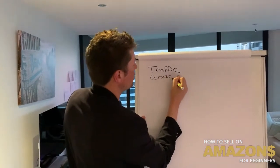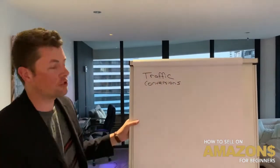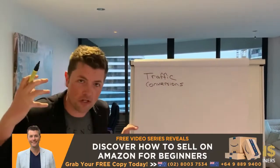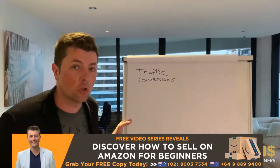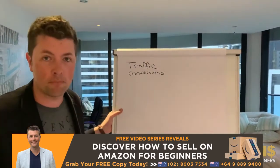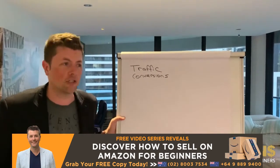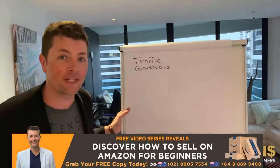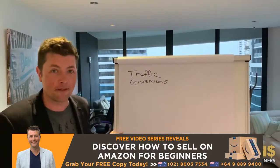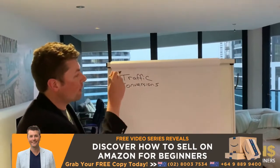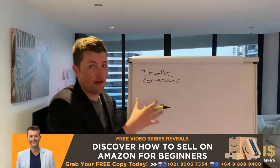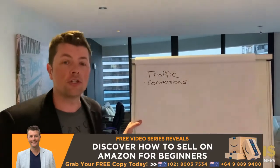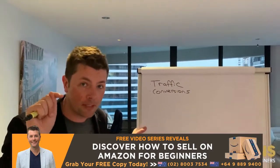There are two issues with your product potentially: traffic and conversion. These are two things you need to understand. Traffic means if you're not getting anyone or enough eyeballs looking at your listing, you have a traffic problem. You might be pulling your hair out wondering why your product isn't selling — it's because not enough people know about it. You can't sell a secret. The best way to find out which problem you have is to look at the stats, look at the reports. Go to business reporting, scroll down, click detailed reports.